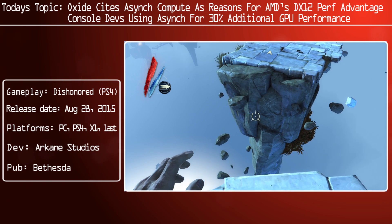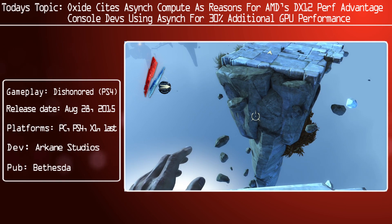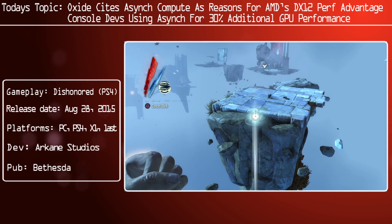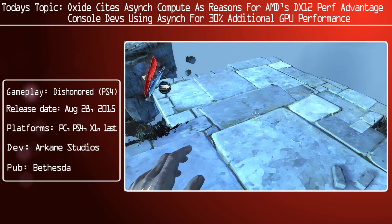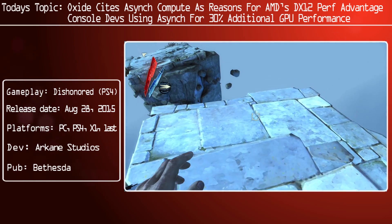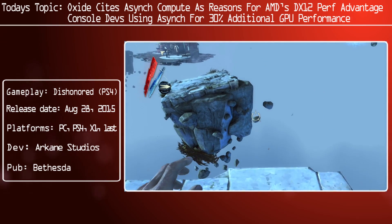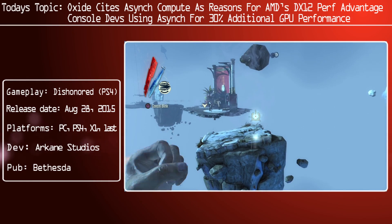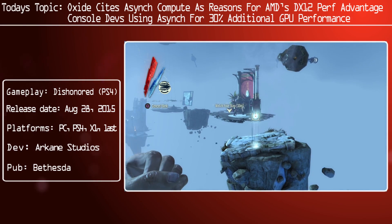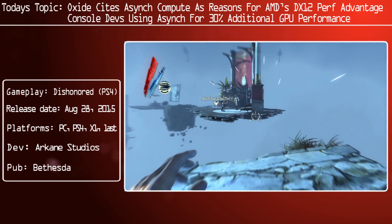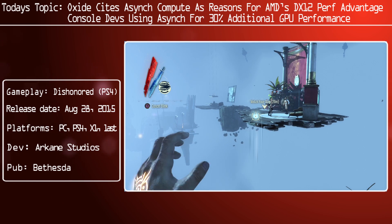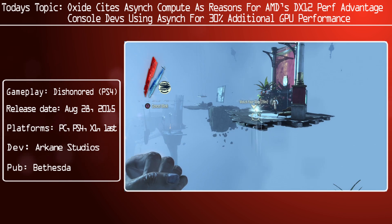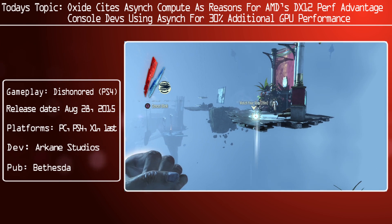The really interesting thing here is that their comments also pertain to the next generation consoles as well, since those systems are using AMD's GCN architecture. They say that they have heard of developers getting up to 30% of additional GPU performance by utilising asynchronous compute.